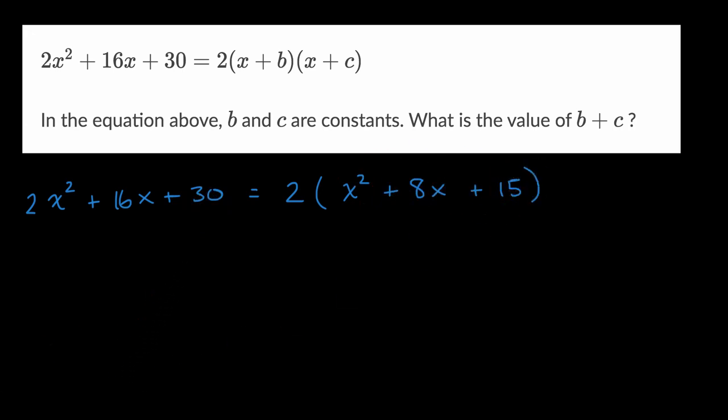And then it looks like what they have done is, they have factored this part into (x + B)(x + C). And the simplest way to factor things is to say, all right, are there two numbers that when I add them, I get 8 and that when I multiply them, I get 15. And those two numbers are actually going to be B and C.